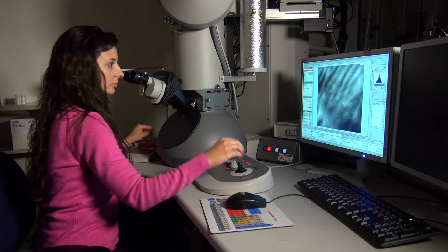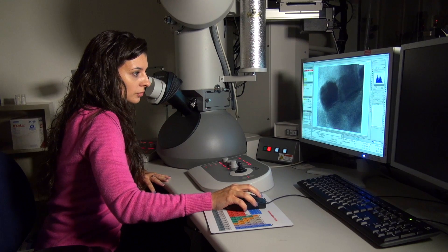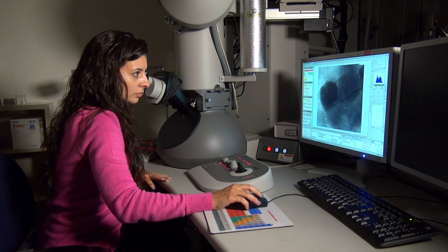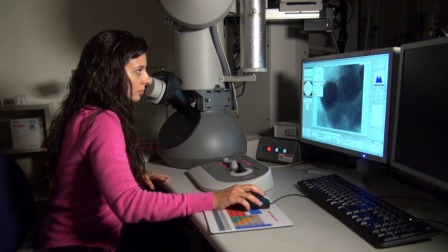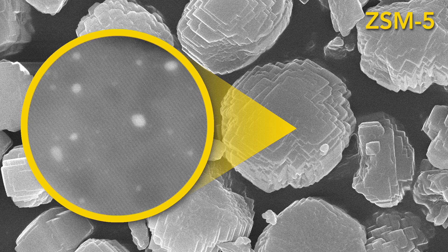Using scanning transmission electron microscopy, we can get an even clearer picture of the structure. For example, in this image, you can see the crystal structure of the zeolite as well as the brighter dots that correspond to small clusters of platinum atoms. The location, size, and distribution of the platinum atoms determines many important properties of the chemical reactions.